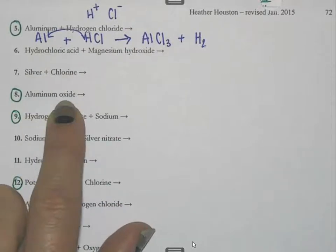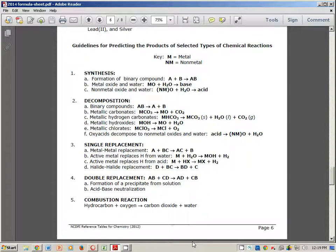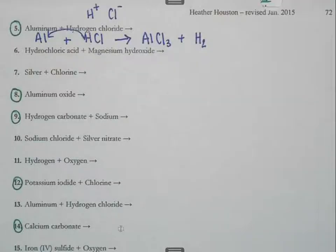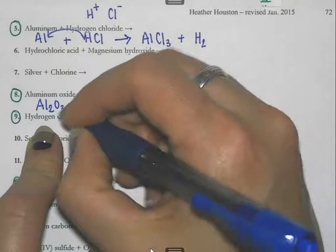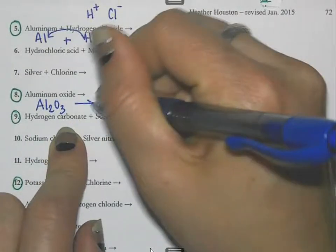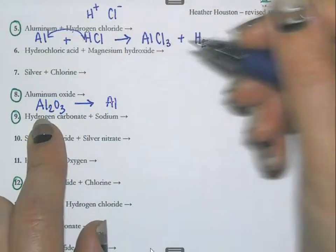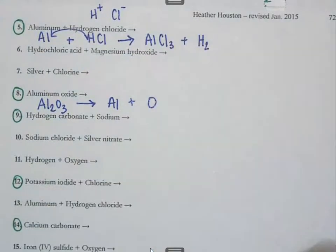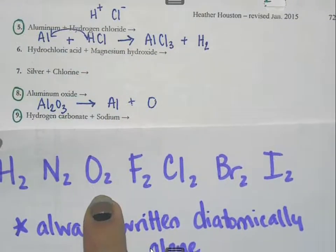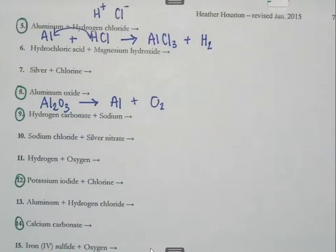The next reaction is aluminum oxide. I have one compound, and looking at my reference table, one compound alone indicates a decomposition reaction — it's going to break down. Since it's a binary compound with just two ingredients — aluminum and oxygen — it splits into those two ingredients. Aluminum is just Al (not a diatomic), and oxygen is one of the diatomics, so it must be written as O2.